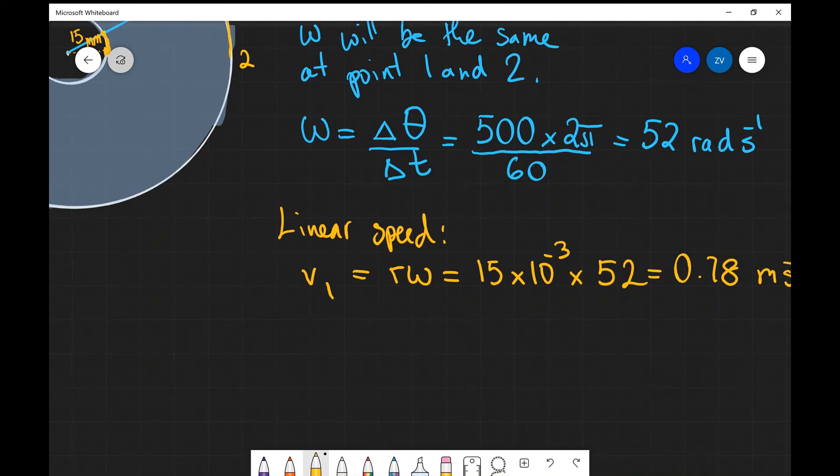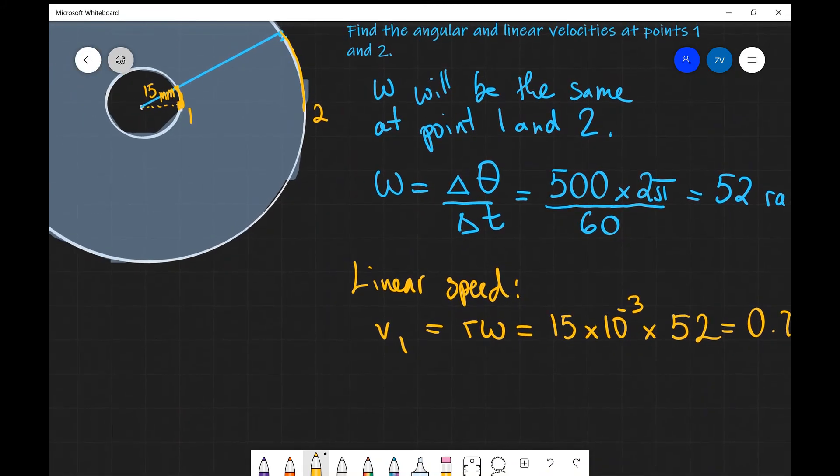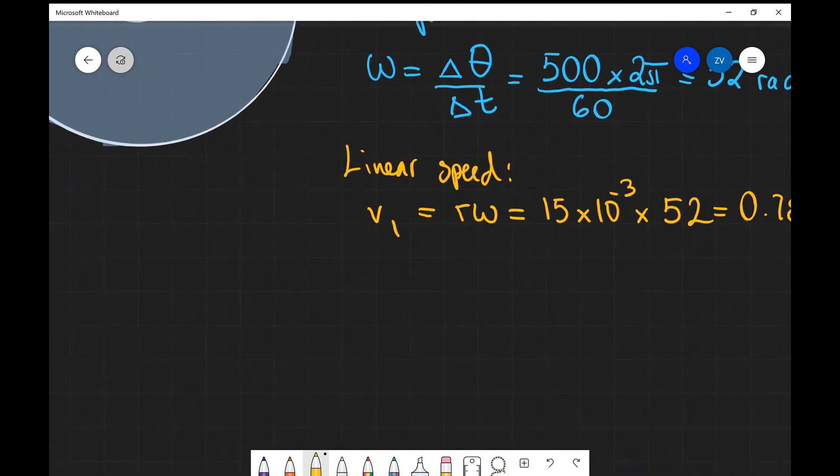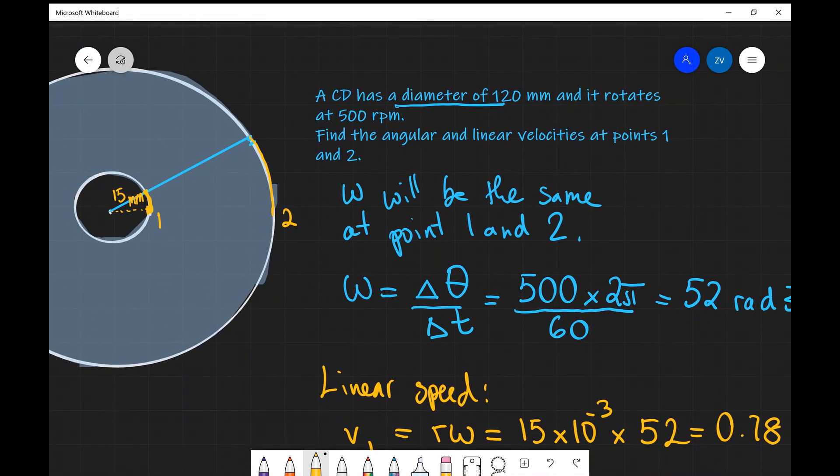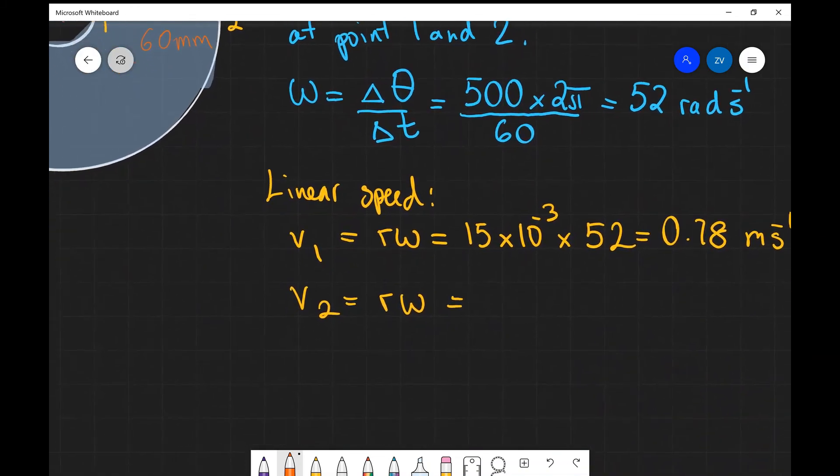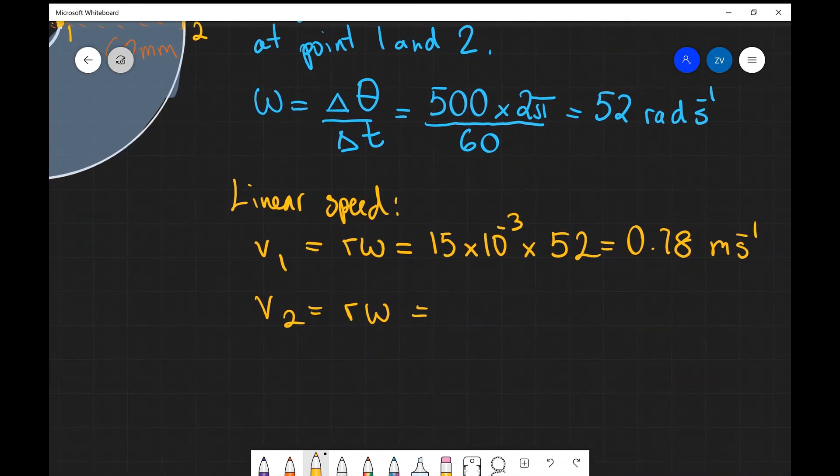Now let's do exactly the same for point 2. So V2 will be R omega, which the diameter is 120. So that means that this full distance, from here to the edge, this will be 60 millimeters. So please don't forget to divide by 2. And let's finish the calculation.